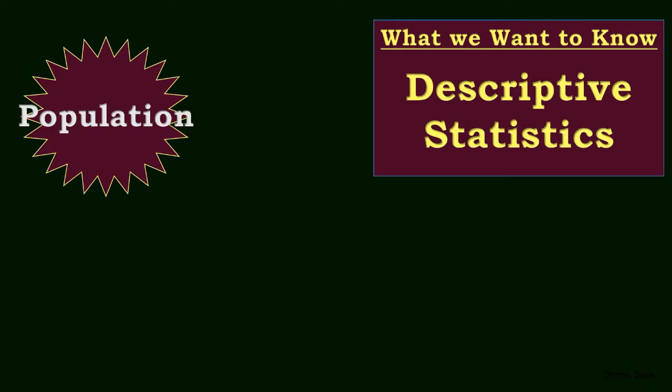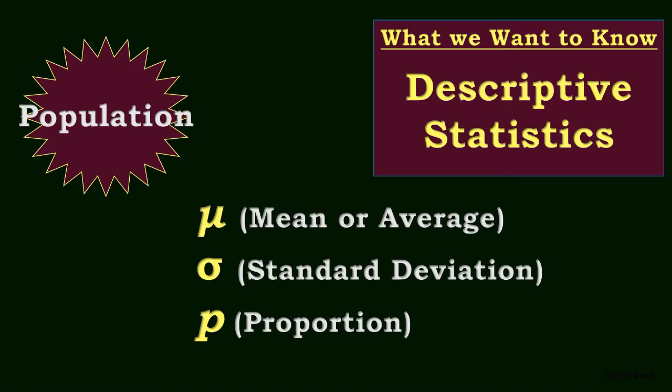These things that we want to know are called descriptive statistics, very commonly the mean or average, the standard deviation, and the proportion.